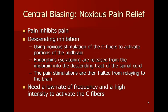The central biasing theory, or noxious pain relief theory, is that pain inhibits pain. This is done through descending inhibition. Using noxious stimulation of the C fibers, you activate portions of the midbrain. Endorphins — usually serotonin — are released from the midbrain into the descending track of the spinal cord, and pain stimulations are then halted from relaying to the brain.